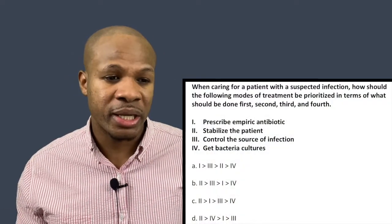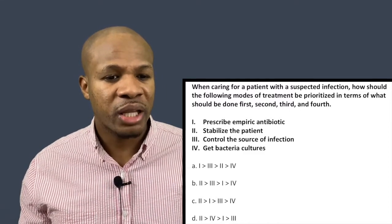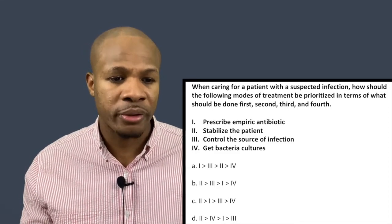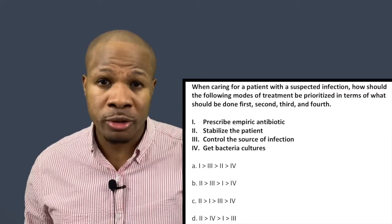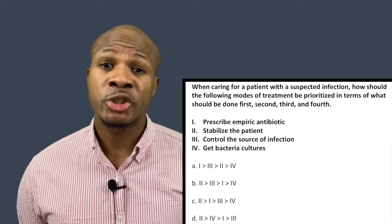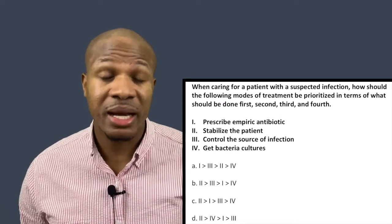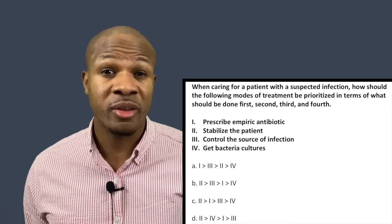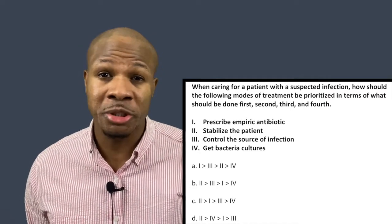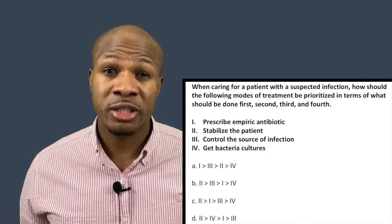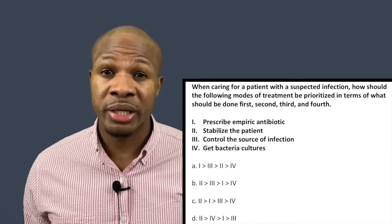Question number three: when caring for a patient with a suspected infection, how should the following modes of treatment be prioritized — first, second, third, and fourth? When treating the patient, the first question you want to ask is how sick is the patient. If the patient is in shock and blood pressure is falling at a drastic rate, the first thing you want to do is stabilize the patient — give epinephrine and fluids to help increase blood pressure. That allows us to eliminate answer choice A.